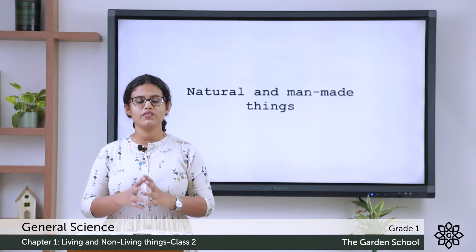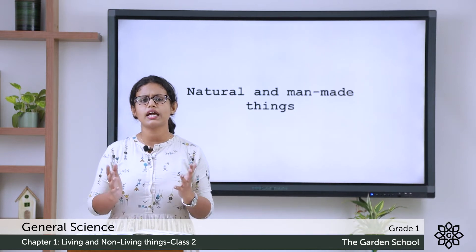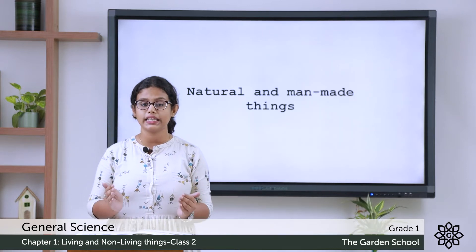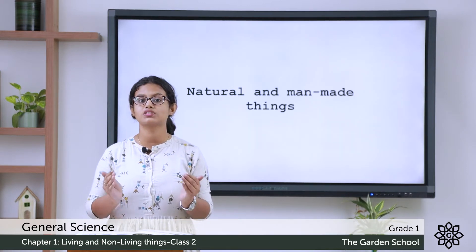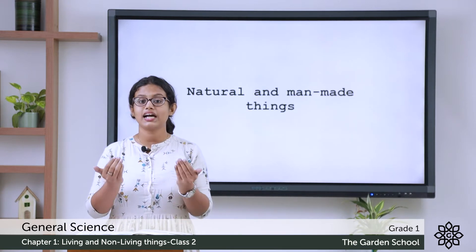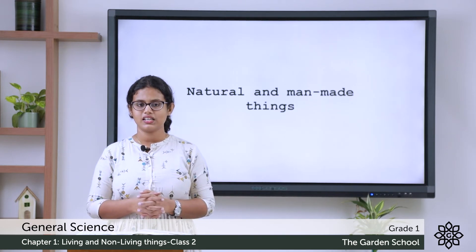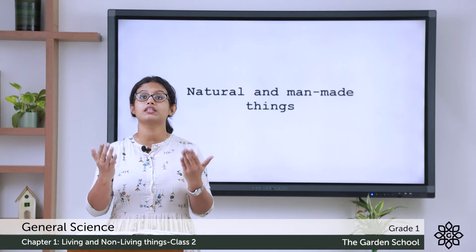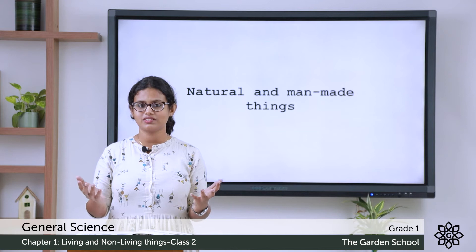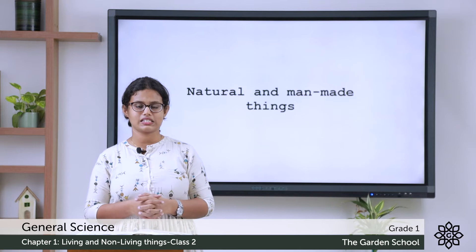Non-living things can be natural and man-made. Things which are found in nature we call natural things. The things which we get directly from nature we call natural things. For example, when you look up at the sky, you see clouds. Clouds are in nature — they are a gift of nature. We call them natural things.